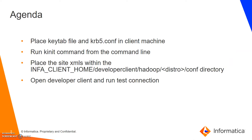When we talk about developer client and Hadoop Kerberos configuration, there are three important tasks. First, place the keytab file and the krb5.conf file on the client machine. Second, run the kinit command from the command line of the developer client machine. Third, place the site XML files within the Informatica client install location, under developer client slash Hadoop slash distribution slash conf directory, and then open the developer client and test the connection.